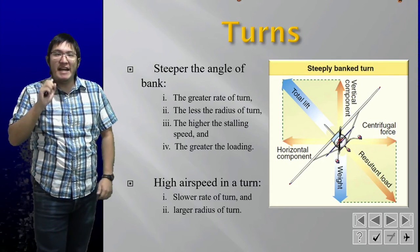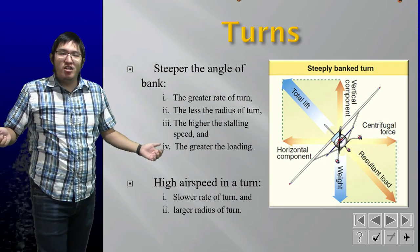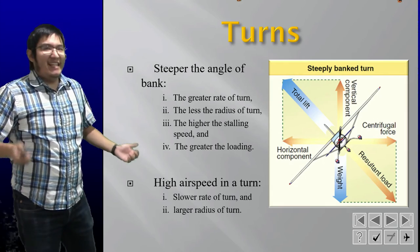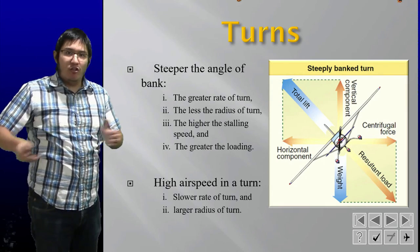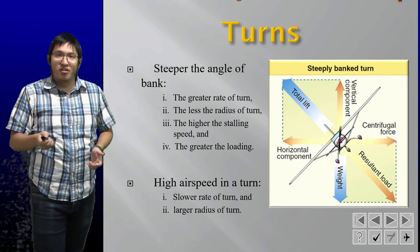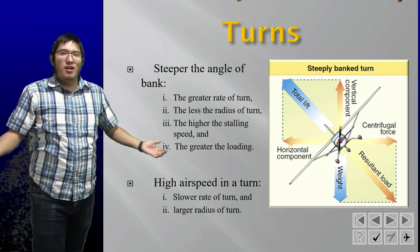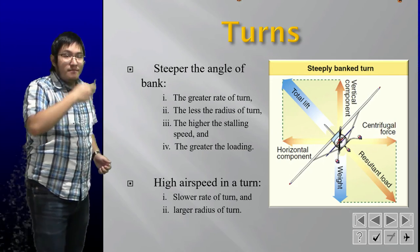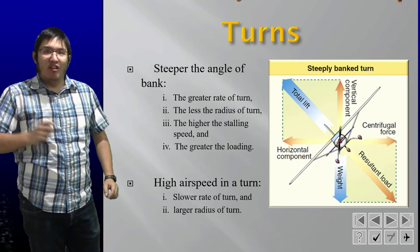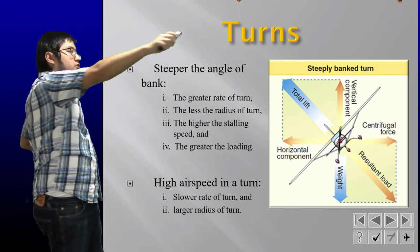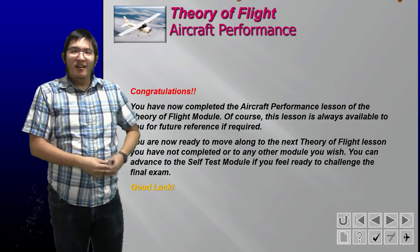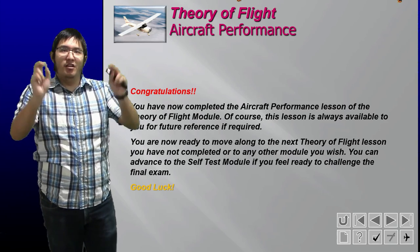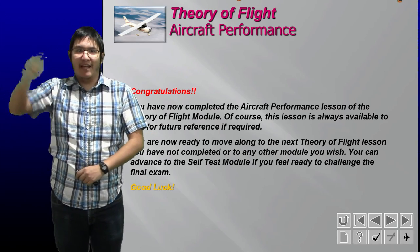When you have high airspeed in a turn, like a car going fast around a corner, you'll have a slower rate of turn because it takes more energy to change direction — that high airspeed means lots of forward energy and the body tends to keep going. This also results in a larger radius of turn, meaning a much wider turn. And that's all! If you have any questions, comments, concerns, or random outbursts, feel free to put them in the comments. Thanks for watching, and happy landings!